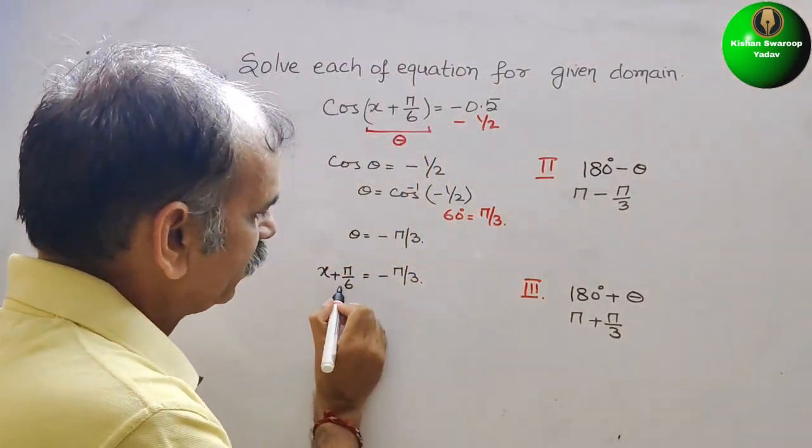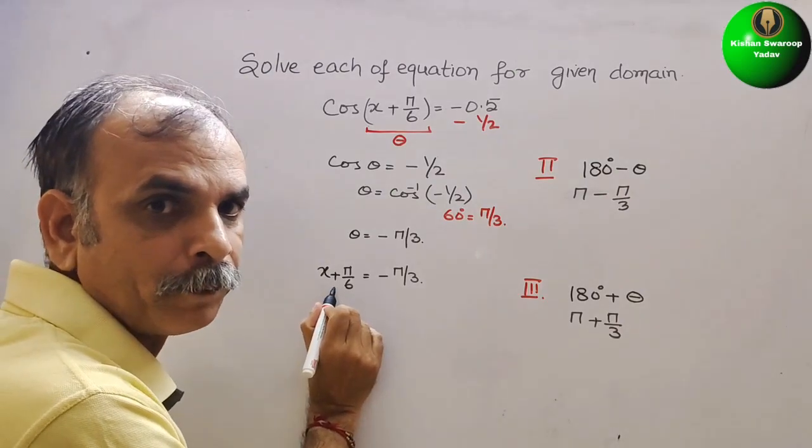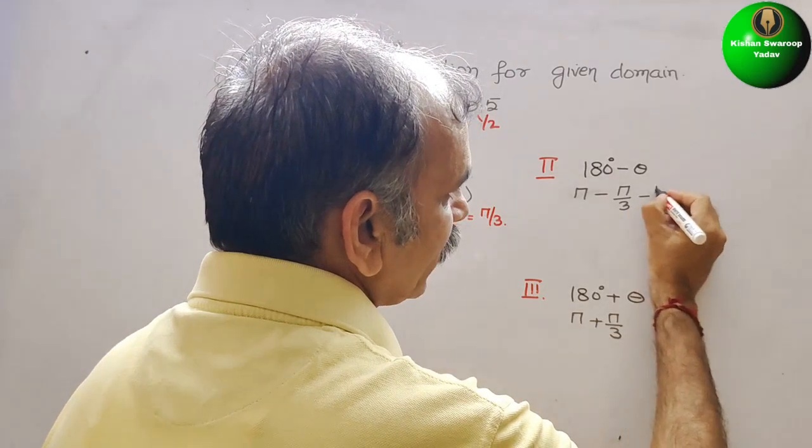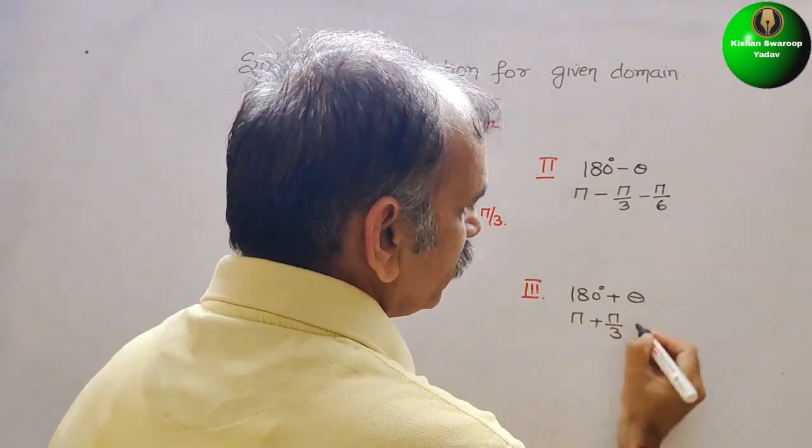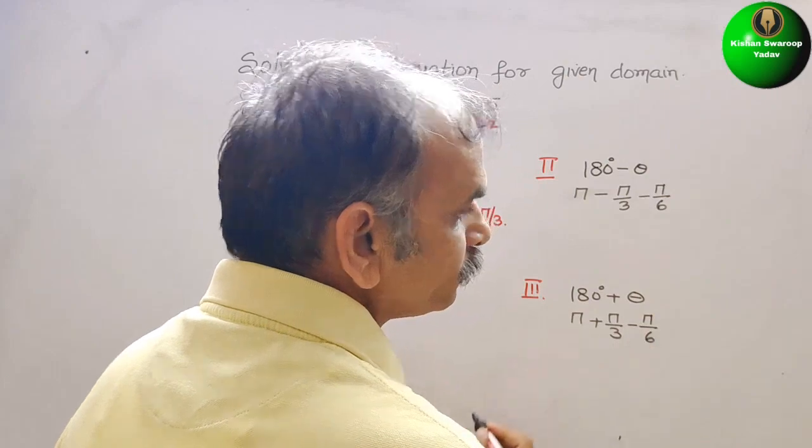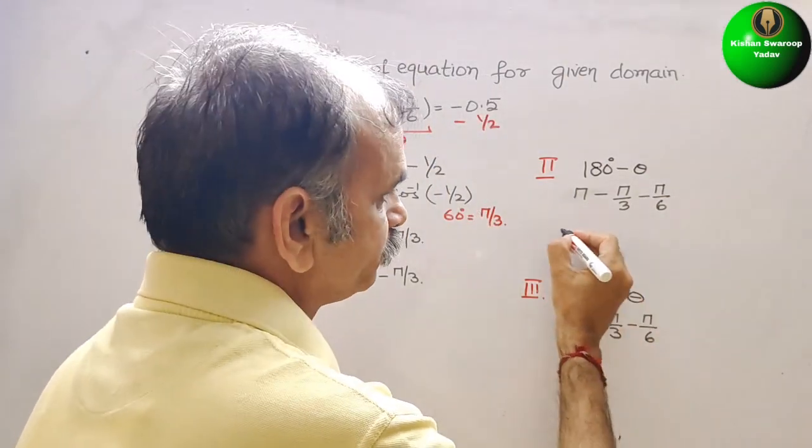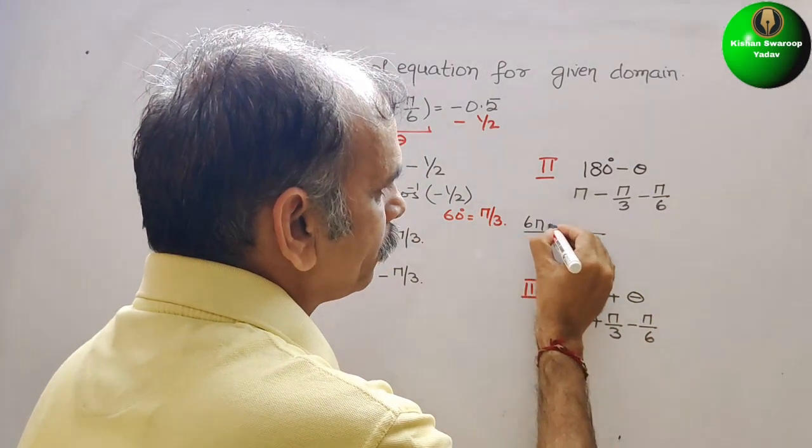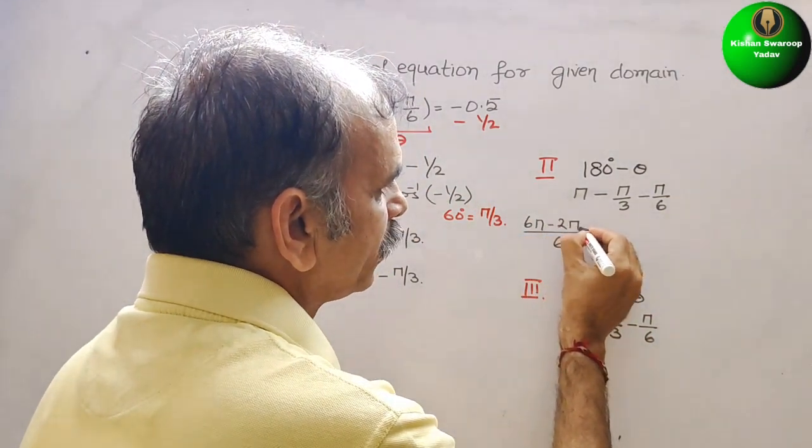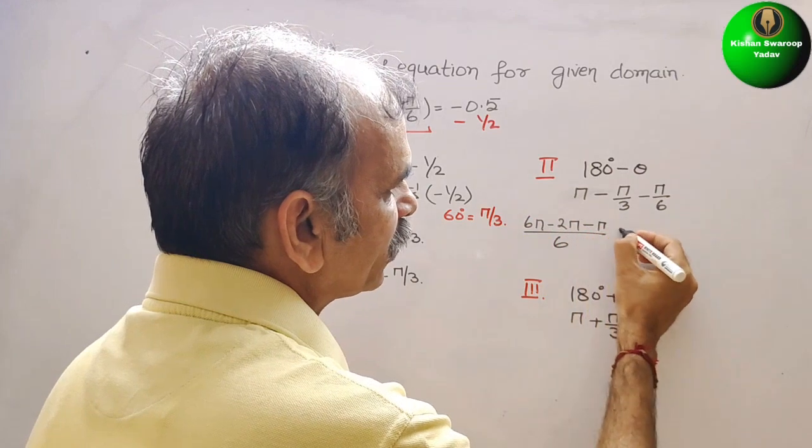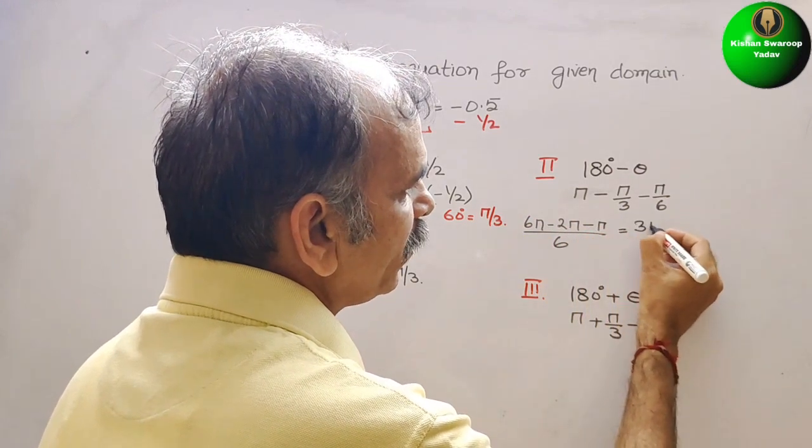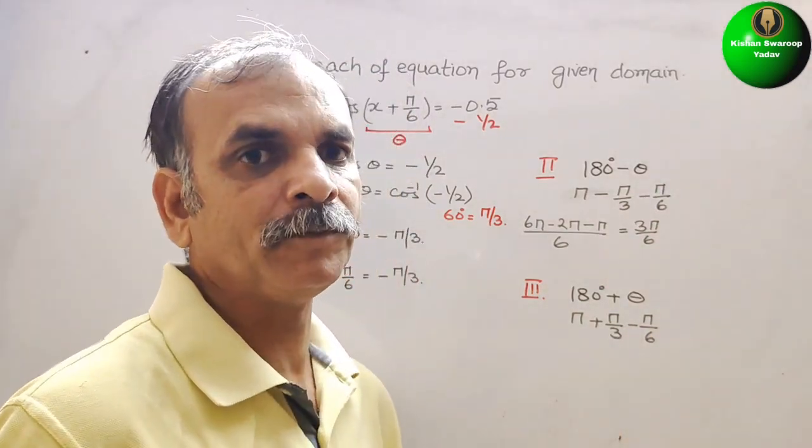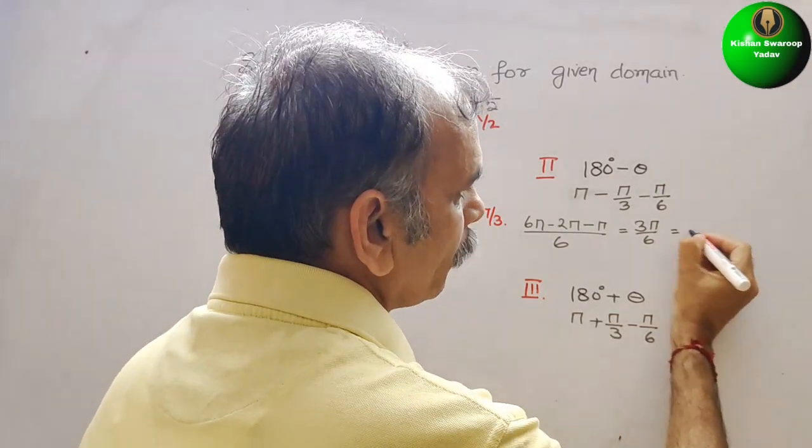Here if you bring π/6 to the right side, it will be -π/6. So here comes -π/6. Here also -π/6. Now take the LCM. LCM is 6. So here you will get 6π - 2π - π, that is equal to 3π/6. Just reduce 3 and 6 by 3. We will get π/2.